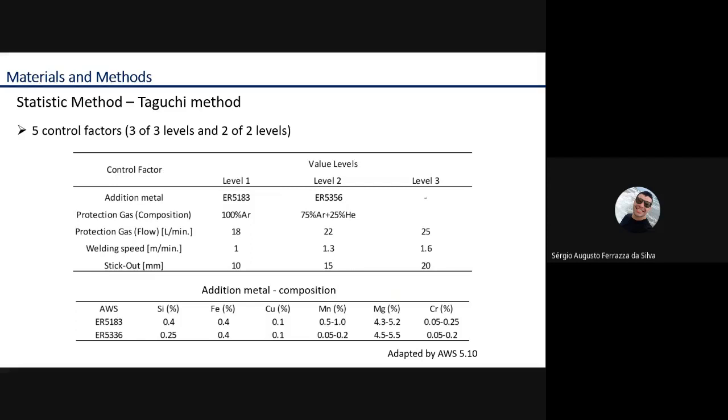The second control factor: protection gas composition, 100% argon for level 1 and level 2, 75% argon plus 25% helium. Protection gas flow in liters per minute: level 1, 18; level 2, 22; and level 3, 25.